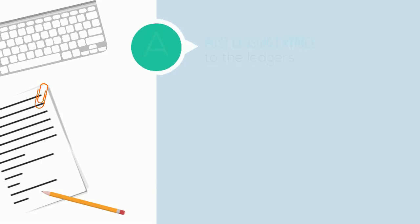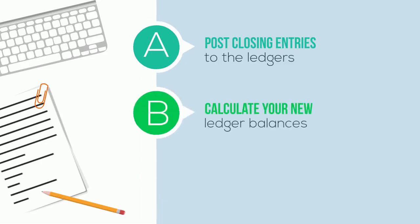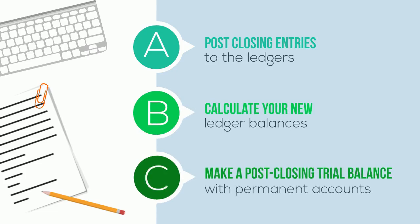Let's review our cycle. We've completed posting closing entries to the ledgers. We've calculated our new ledger balances. And now, we're ready to make a post-closing trial balance with our permanent accounts.